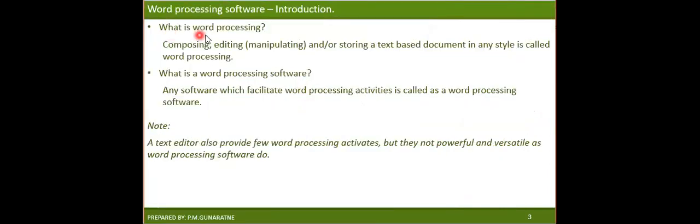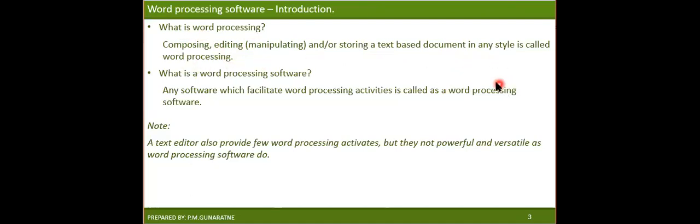So what is word processing? Before understanding word processing software, first try to understand what word processing is. Composing, editing, manipulating, and storing a text-based document in any style is called word processing. That means we are doing various types of activities on a text-based document and adding many kinds of styles — we call that word processing.